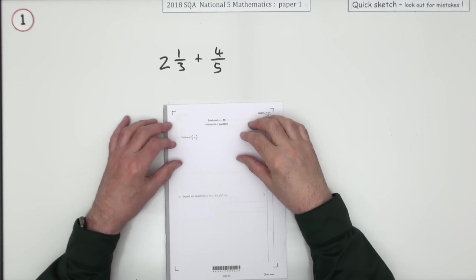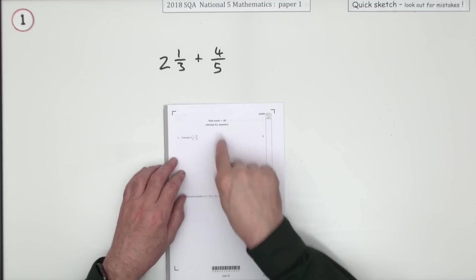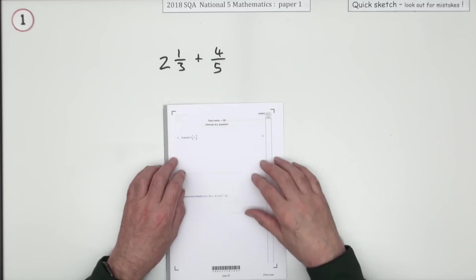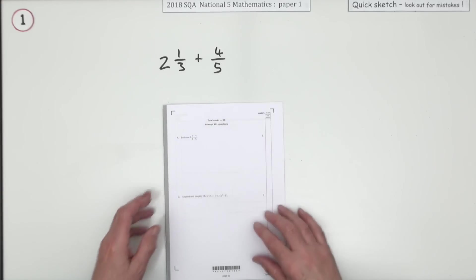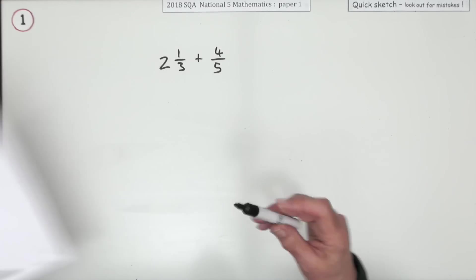So the first question then, Paper 1, 2018 National 5, add these mixed numbers together. Well, once a mixed number, it was just a fraction. Two marks.